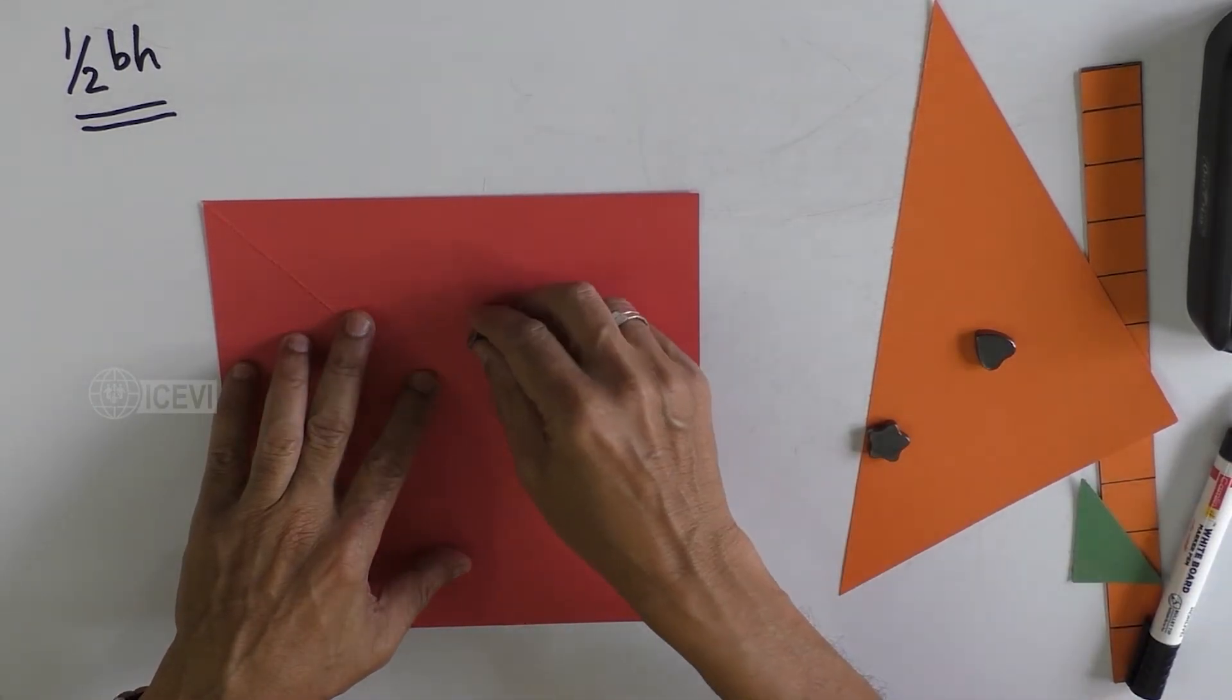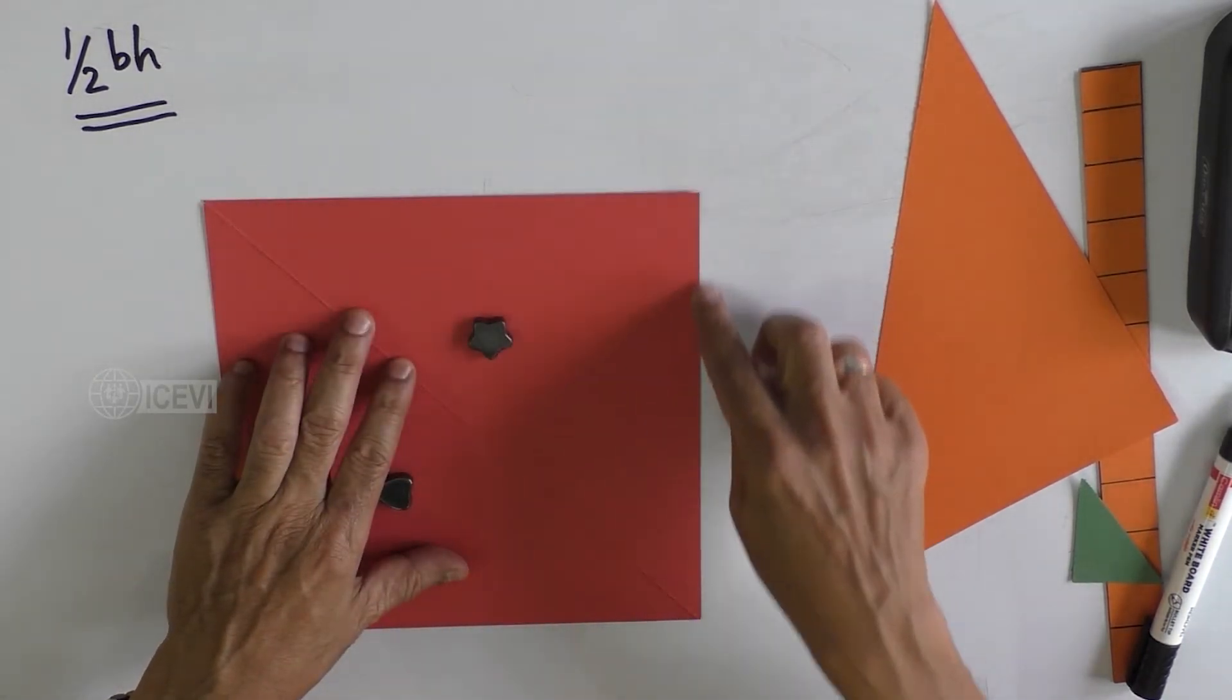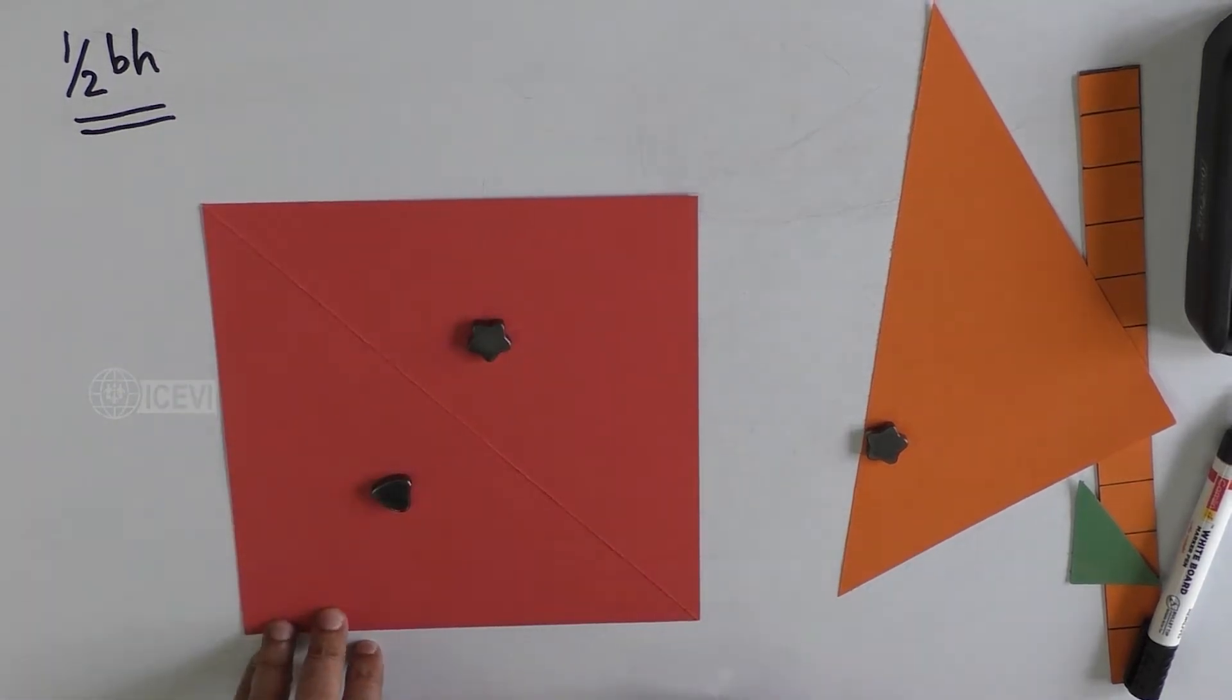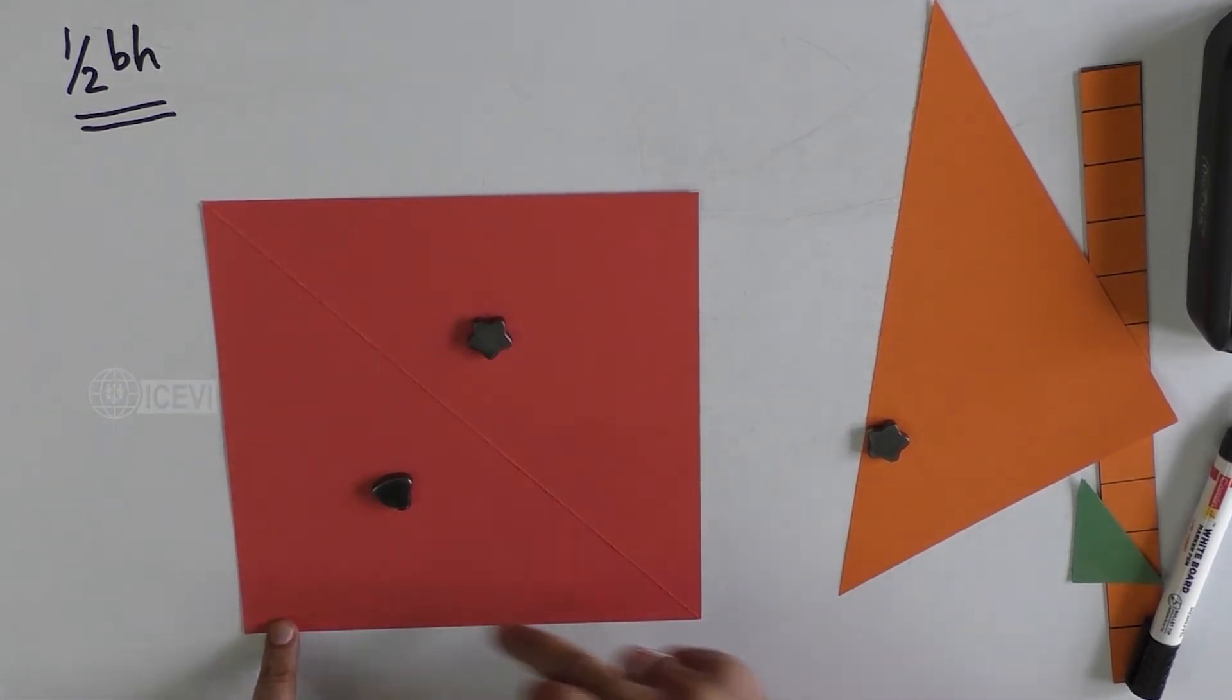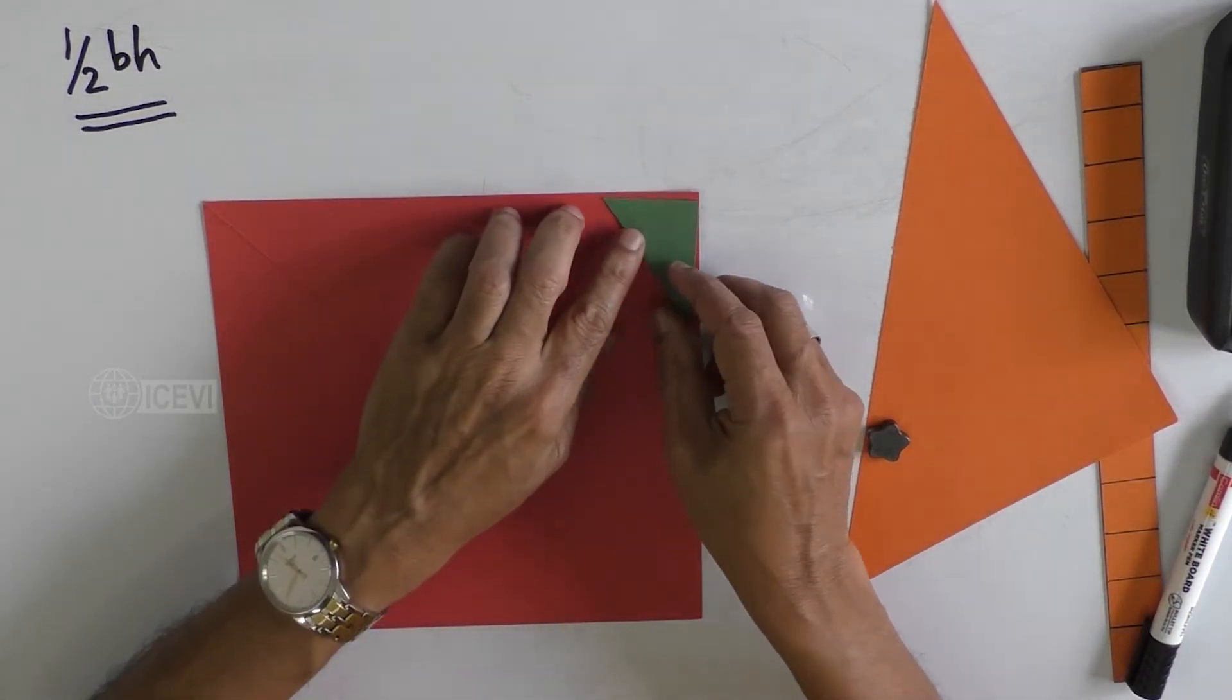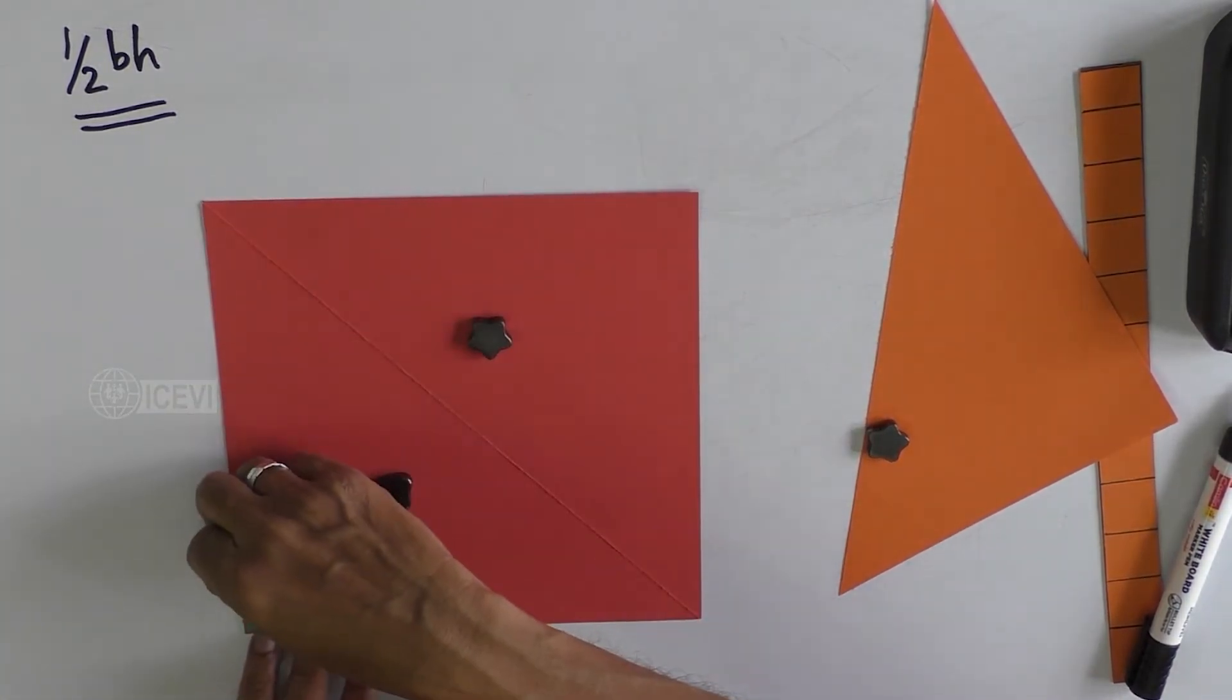Unlike the rectangle, in the square, you have all sides having equal length. Here, the length is same as the width. The other definition is the corner should be right angles.